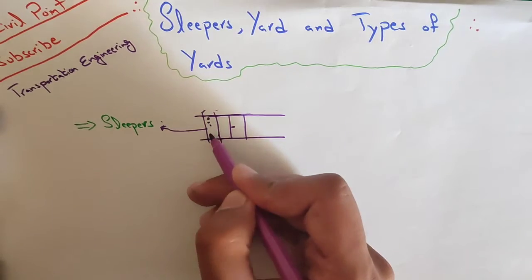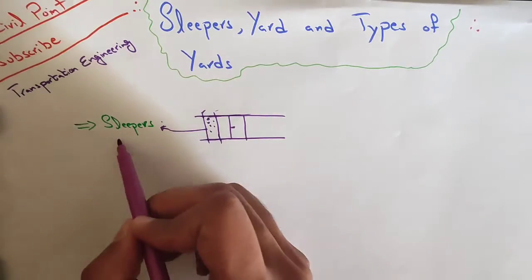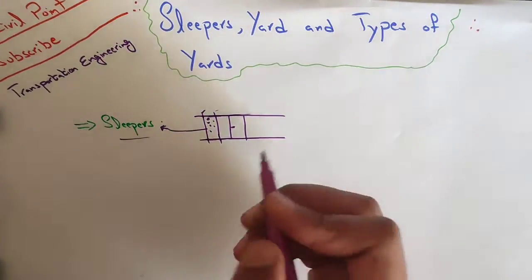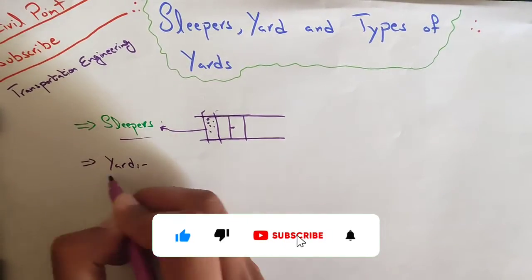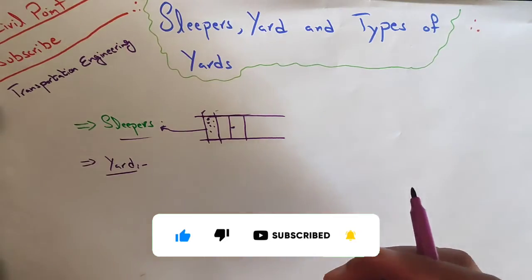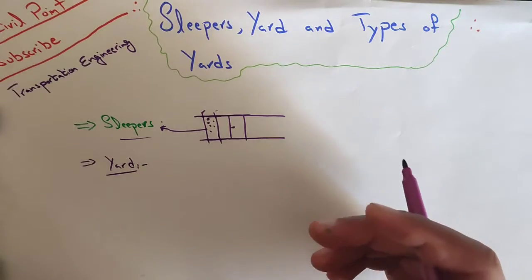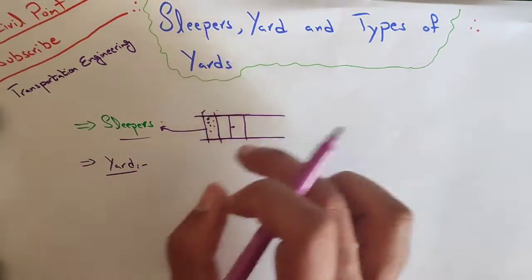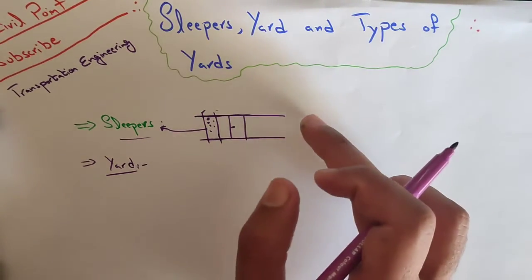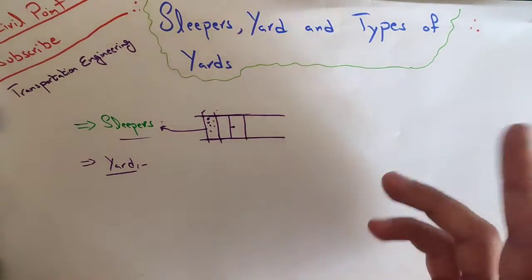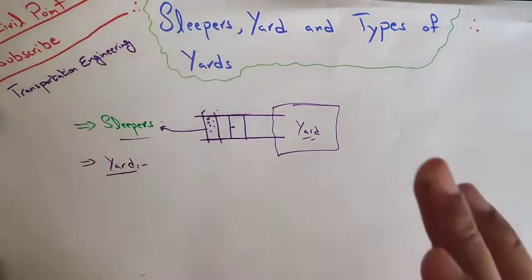These were the major functions of the sleepers. Now we will study yards. What is a yard? A yard is defined as a system of tracks laid within definite limits for various purposes. After covering multiple kilometers or hundreds of kilometers, there will come a platform which we call a yard.